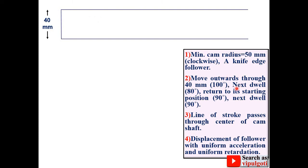Now take the scale as one centimeter is equal to 10 degree. So that the length of the outstroke is equal to 10 centimeter. Then next dwell is 80 degree, so the length of the dwell period is 8 centimeter. Then next the return stroke is 90 degree, so the length of the return stroke is 9 centimeter. And next remaining dwell is 90 degree, so the length of the dwell period is 9 centimeter.